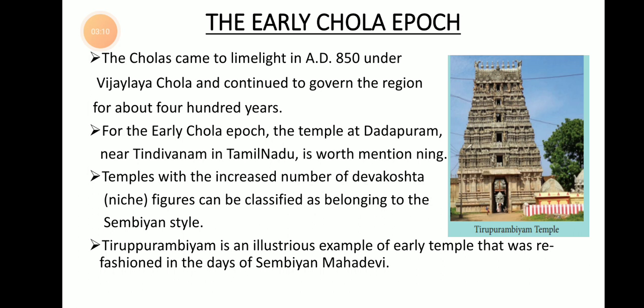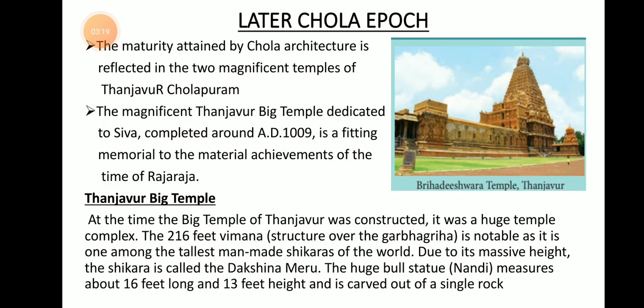The Thirupuram Bhiyam temple followed the Sembian Mahadevi system of architecture. After the Early Chola age, it was followed by the Later Chola age. During the Later Chola age, Chola architecture started to progress and develop slowly, attaining its greatness. Two important architectural achievements of the Chola age are the Tanjavur Big Temple — the Brihadeeswarar Temple — and the Gangaikonda Cholapuram temple.